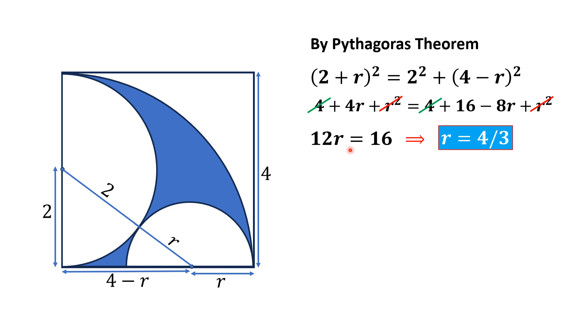So blue shaded area is equal to the area of this quarter circle minus area of this semicircle having radius equal to 4/3. So substituting the area formula of the circle.